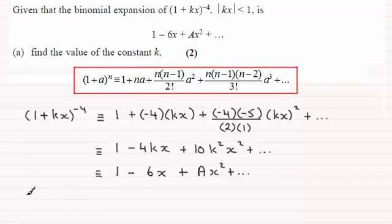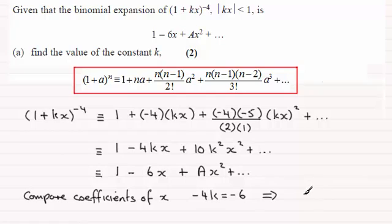So if we compare coefficients of x then what we've got is that -4k must be equal to -6. So from this it follows that k would be equal to 6 over 4, and that reduces down to 1 and a half or 3 over 2.